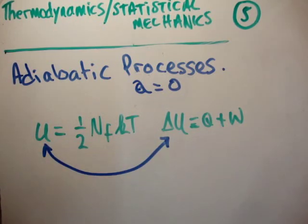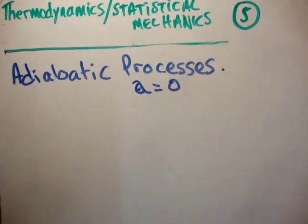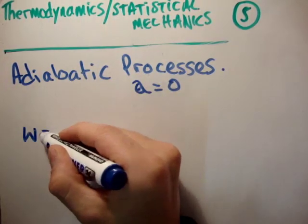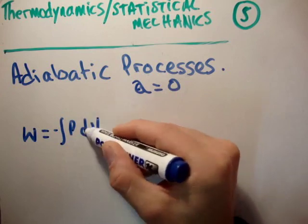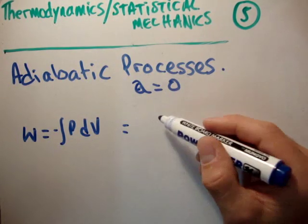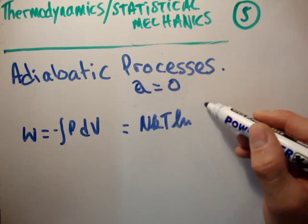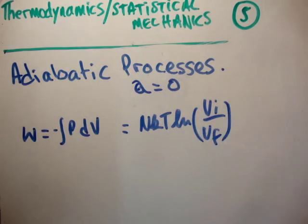Note that the total internal energy and the change in internal energy are distinct — this is very important. From our previous video on compression work, the work done equals minus the integral of p dV, and substituting the ideal gas law gives work done equal to nkT times the natural logarithm of Vi divided by Vf.